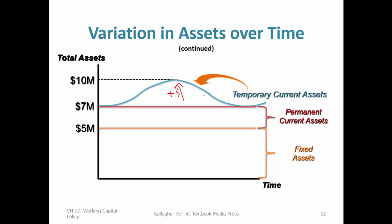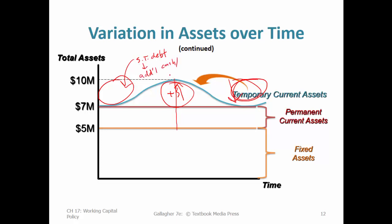Sales go down in the off-season, accounts receivable are paid, and those temporary current assets ebb and flow. This fluctuation is important for working capital management — if we want to keep current assets at a certain level, we need to balance the lean times where temporary current assets decline with the flush times. In lean times, we may need to fill in with additional short-term debt, lines of credit, or commercial paper to acquire some additional cash or securities as a current assets buffer.